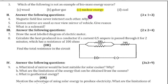Second section: answer the following questions, 3 marks each. Fourth question: magnetic field lines never intersect each other. Fifth question: convex mirror is used as a rear-view mirror in vehicles — give the reason. And what is a solenoid? These are easy questions that you can solve easily.